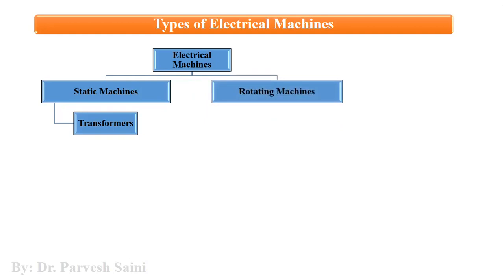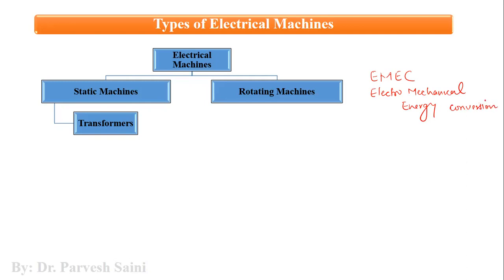The second broad category is rotating machines. Rotating machines are those machines in which we have electromechanical energy conversion — EMEC. That means such machines involve electrical-to-mechanical conversion or mechanical-to-electrical conversion. We call such machines rotating machines or electromechanical energy conversion devices.